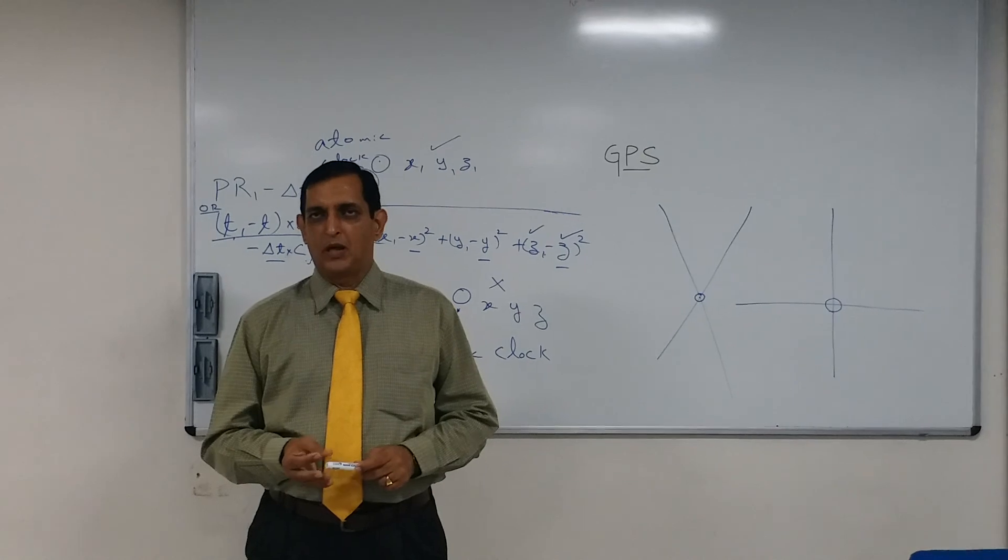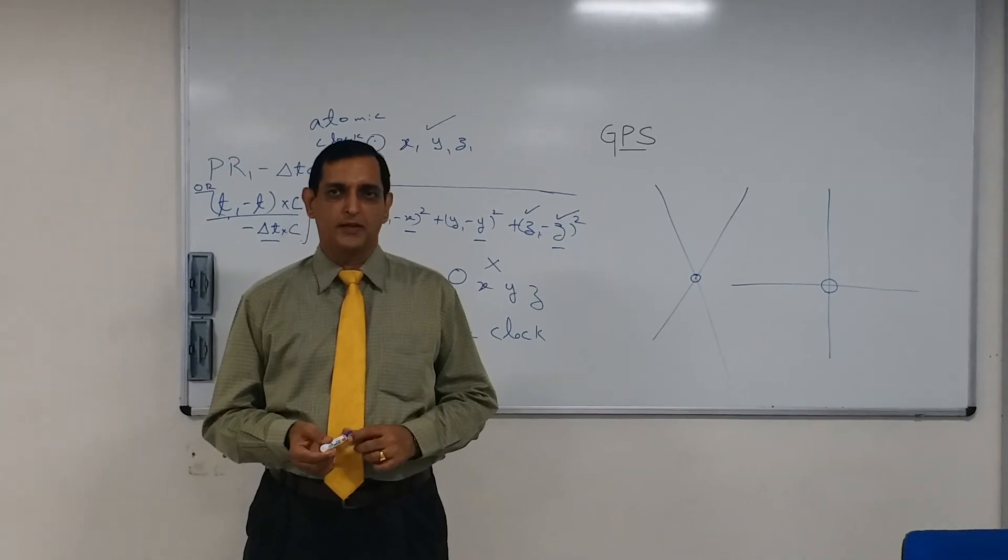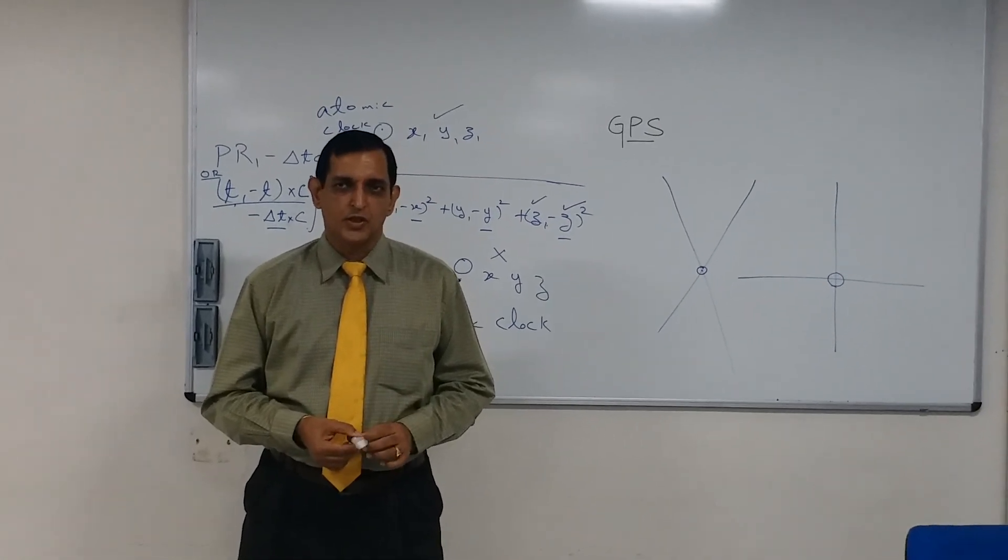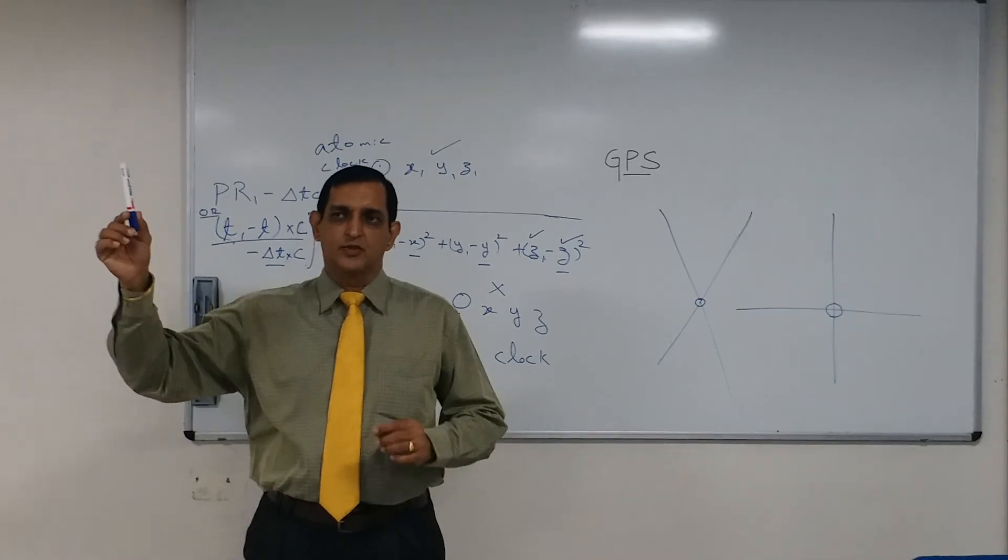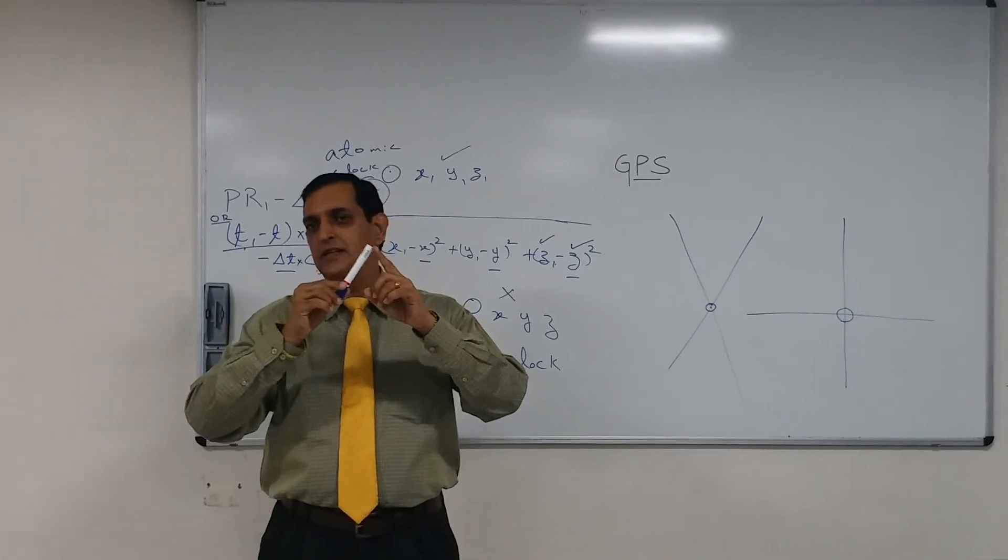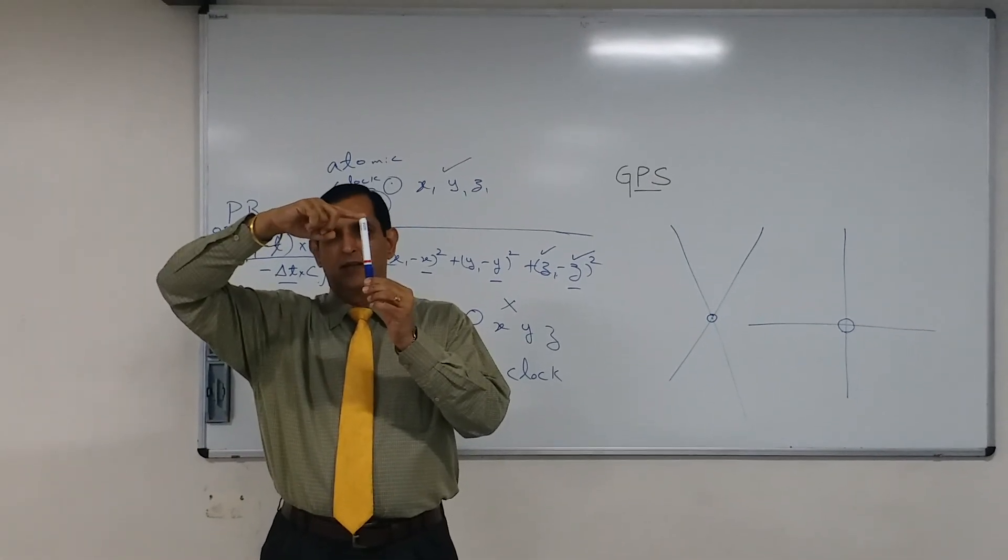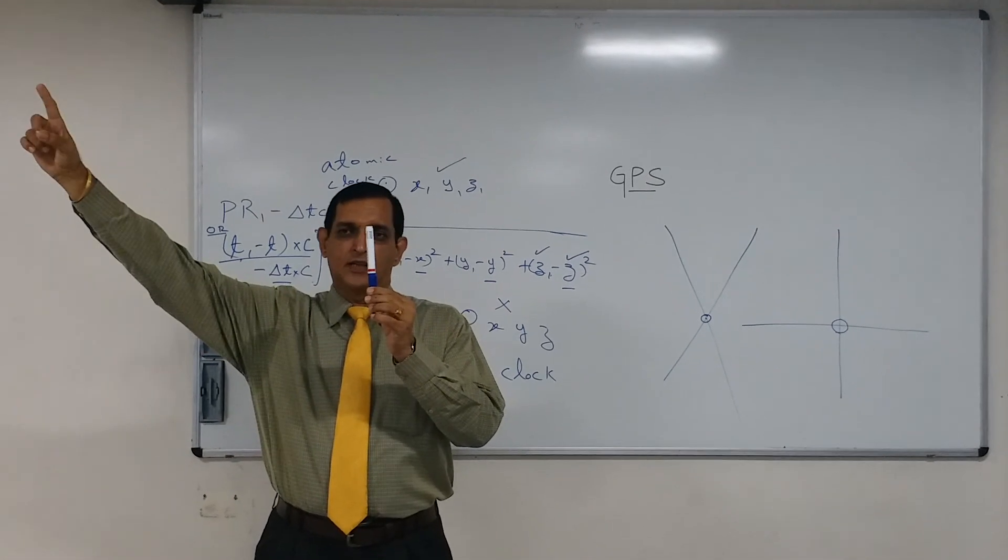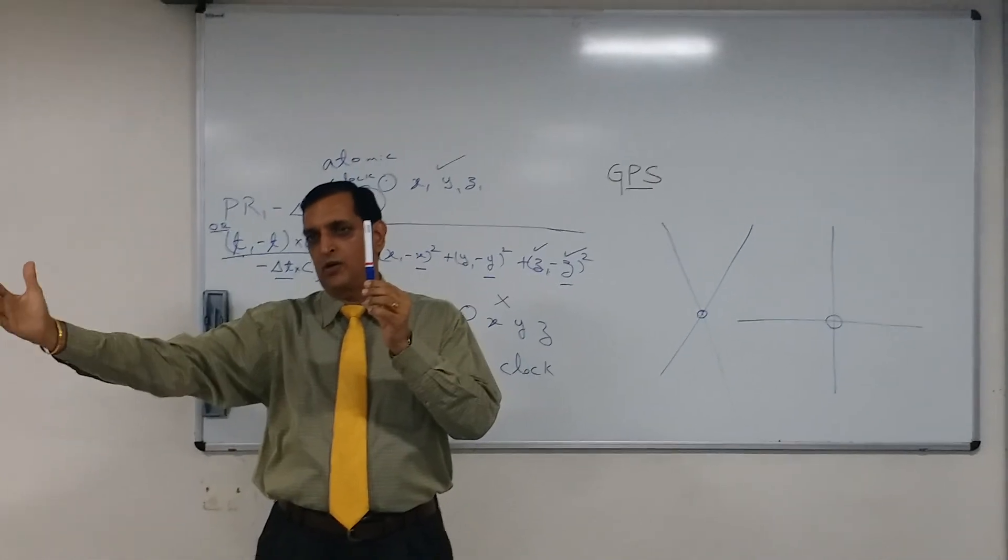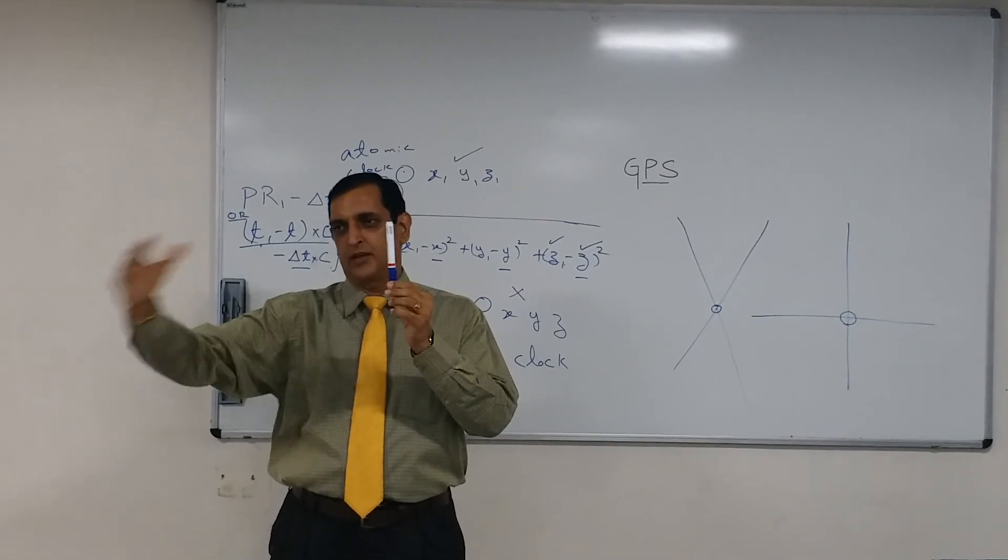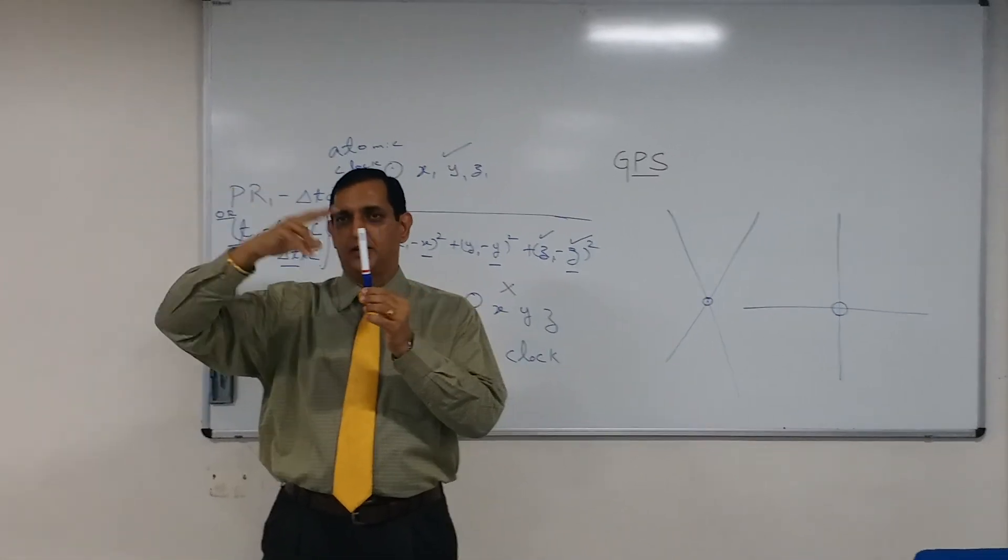What is next? Multi-path error. What is multi-path error now? Basically, the satellite signals should actually come directly to your antenna. Let us say, this is your GPS antenna, satellite signal should come directly. What are the chances that the satellite signal may be hitting some other antenna or the hull of the ship or some railing or something, funnel of the ship for that matter and then coming here.